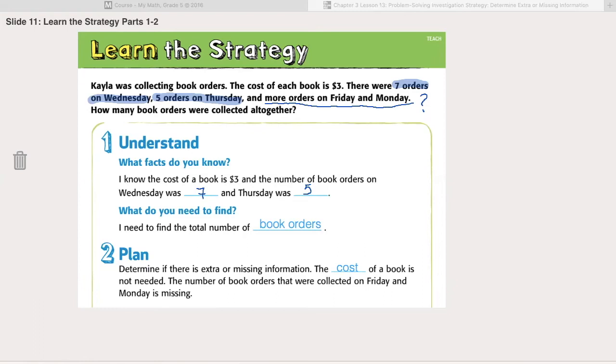But the problem is that we do not know how many orders were collected on Friday and Monday, and we don't know the total. And without knowing what book orders there are on Friday and Monday, we do not have enough information to solve the problem. We are missing crucial information to solve the problem.